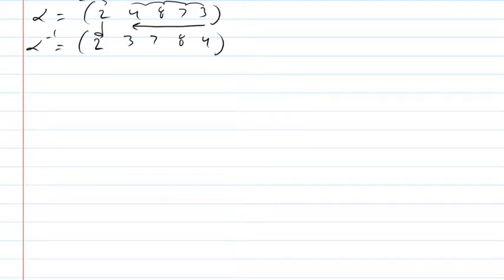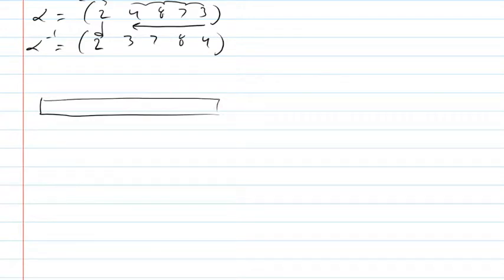That's what happens if I have a single cycle — its inverse is just the reverse of it. But if I have a more complicated thing, imagine I have a set of moves with five numbers — 1, 2, 3, 4, 5 — and I make a move that's more complicated so it can't be described as just one cycle.